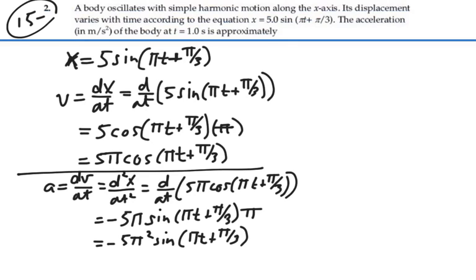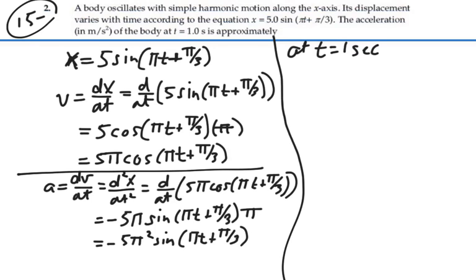That is our acceleration for all time. So at the particular time where t is equal to 1 second, we have that the acceleration is equal to negative 5 pi squared times sine of (pi times 1 second plus pi over 3).